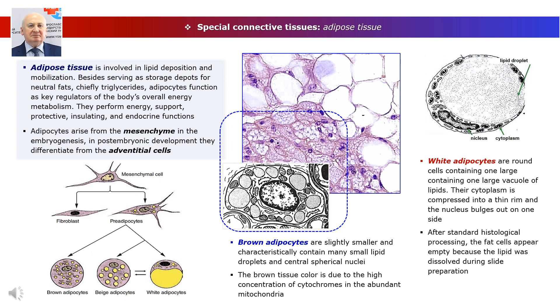Brown adipose tissue serves as a generator of heat and participates in thermoregulation. In humans, it is found during the first year of life, where it is located in the axillae, in the fat pad of the kidneys, and in the triangle of the neck.